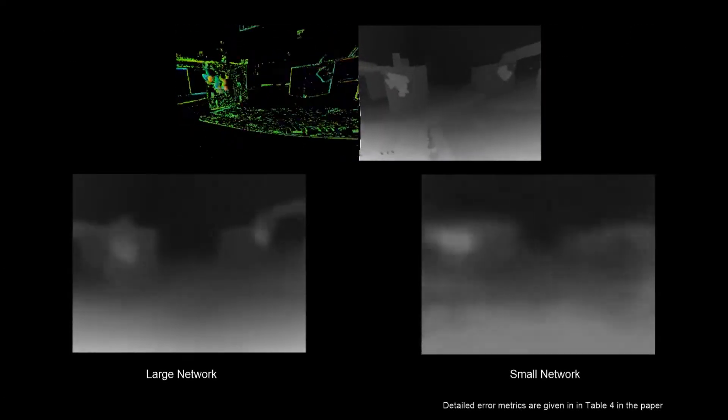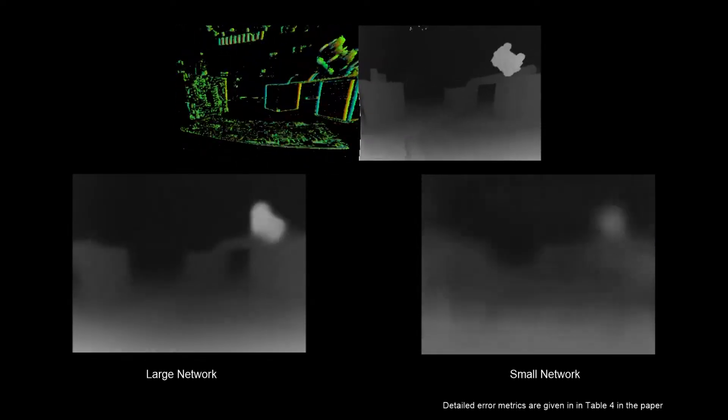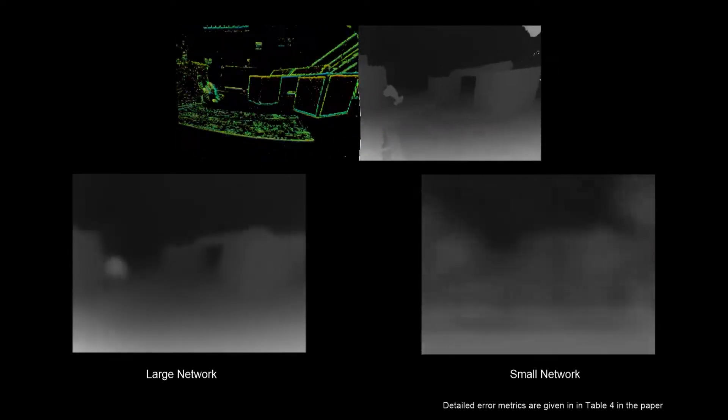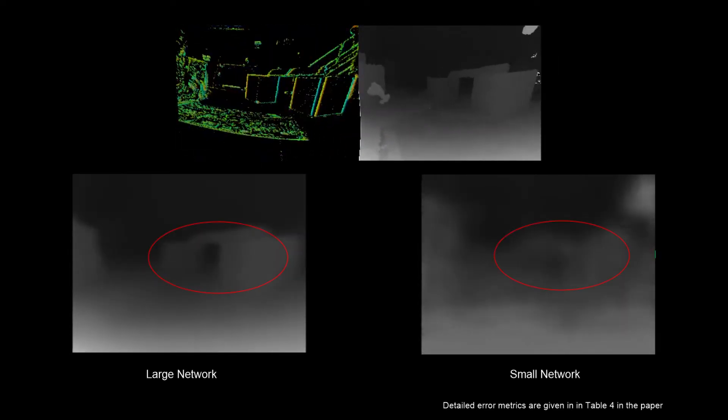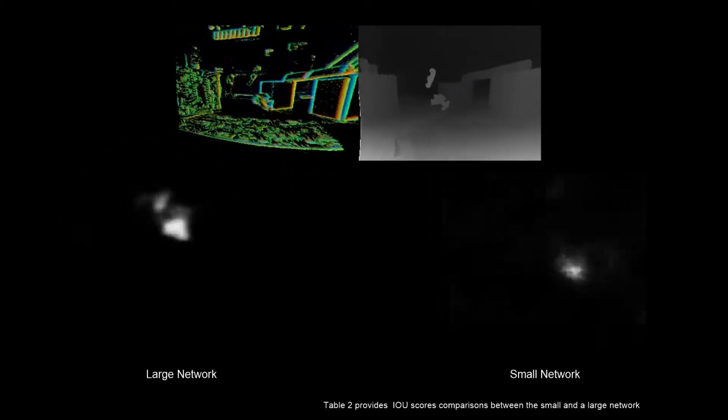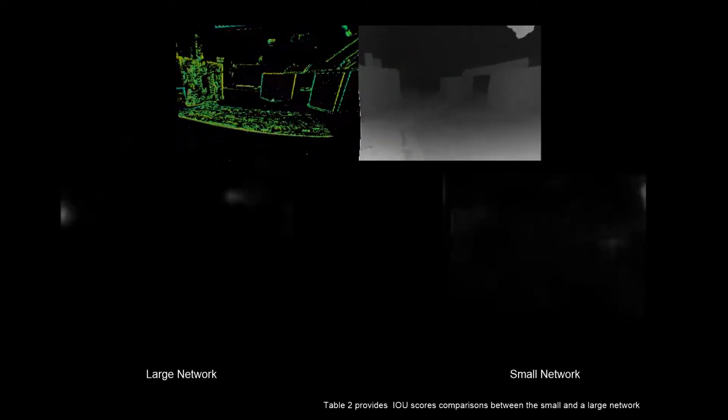We compare the depth estimation accuracy of our large and small network. Note the depth of the background. Most of the drop in quality is due to loss in boundary sharpness, while the average depth values remain acceptable. The motion mask estimation also retains reasonable quality in the small network, however, with more outliers.